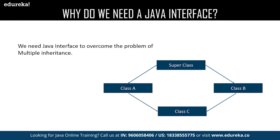As you can see, there is a super class and this super class is inherited by two classes called class A and class B. Now we are trying to inherit the properties of class A and class B into our new class which is class C, which practically seems impossible in terms of Java. The question would be: is it seriously impossible to do it? That's when the interface comes into the picture.